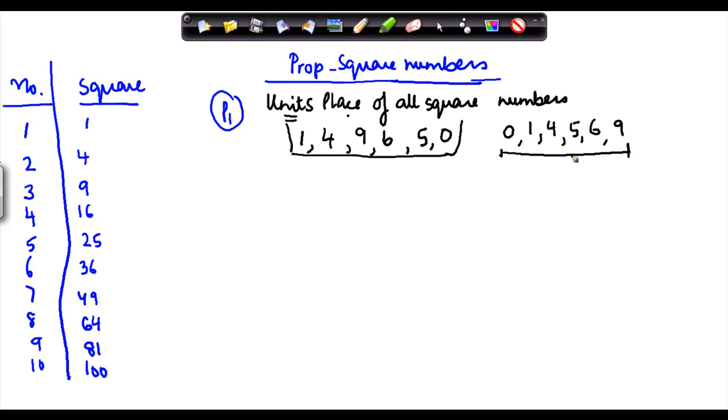Now this does not mean that all numbers which have the units place as one of these numbers are square numbers. So let's say suppose I have 31, is 31 a square number? I see it from this list, these are the natural numbers. We have 25 and we have 36 but 31 falls between these two numbers.